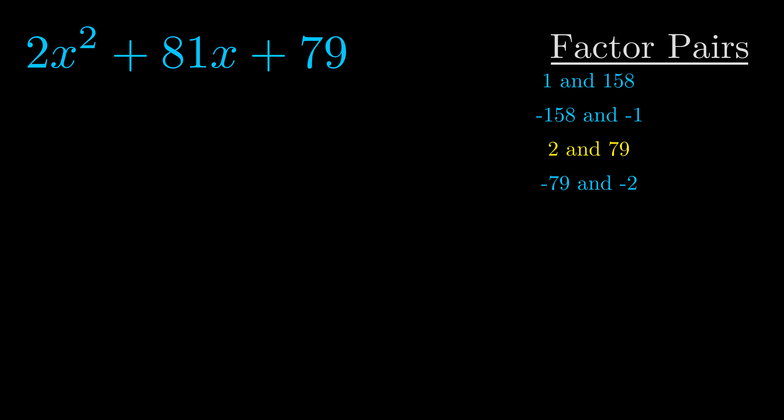And really this is the only factor pair that we need. Now once we have this factor pair, what we want to do is use it to split up the b value.